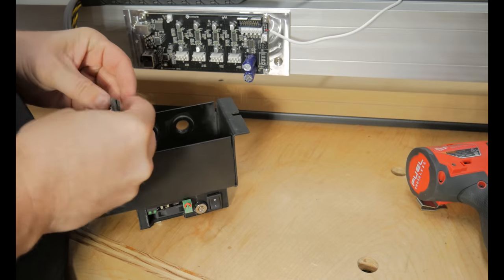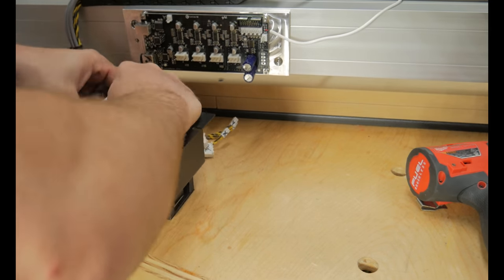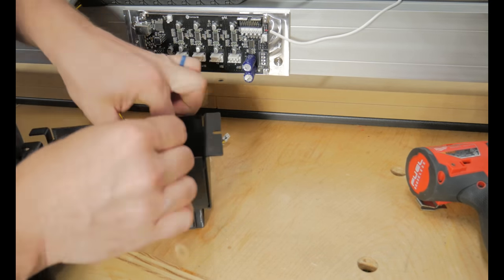Now we'll re-run the wires through the controller cover and then attach that cover back onto the Chapoco.